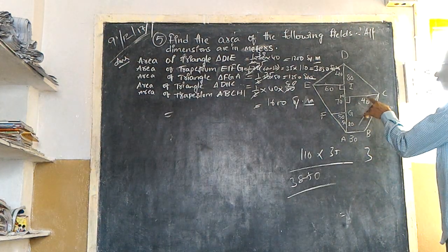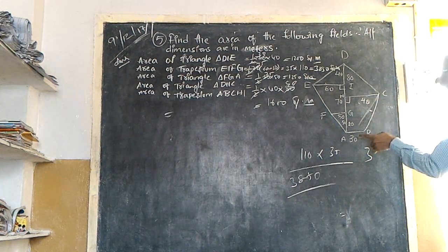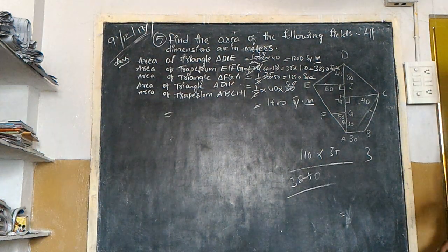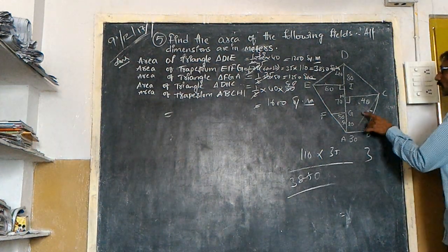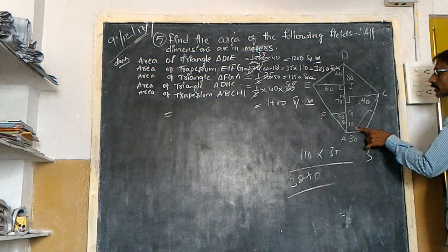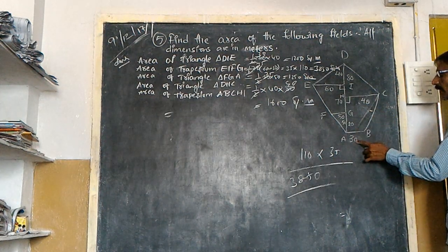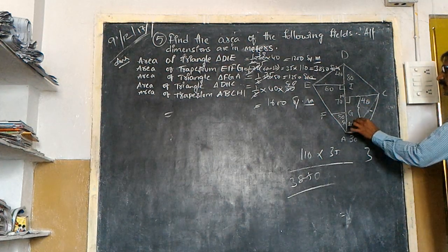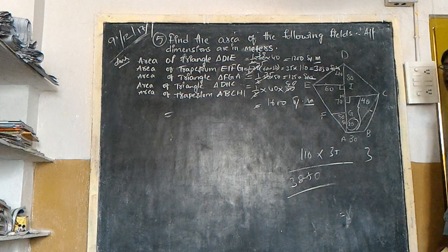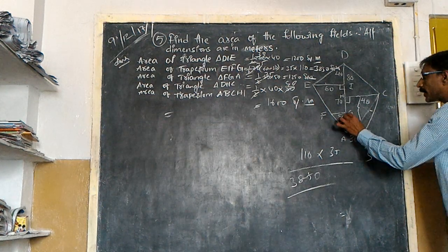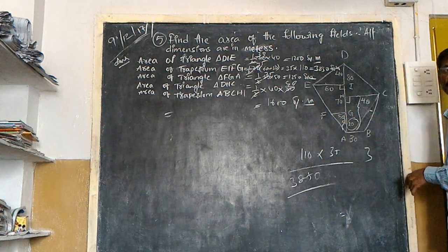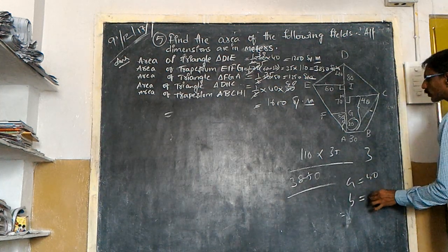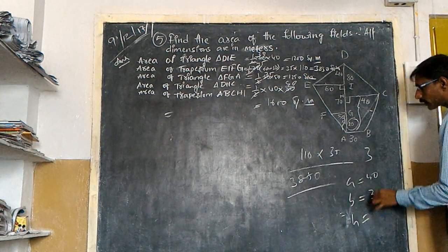Here the 30 and 40 are parallel sides. So this is my A and this is my B. And this is my parallel distance, how much? This is 15. So A is equal to 40 and B is equal to 30 and H is equal to 80.